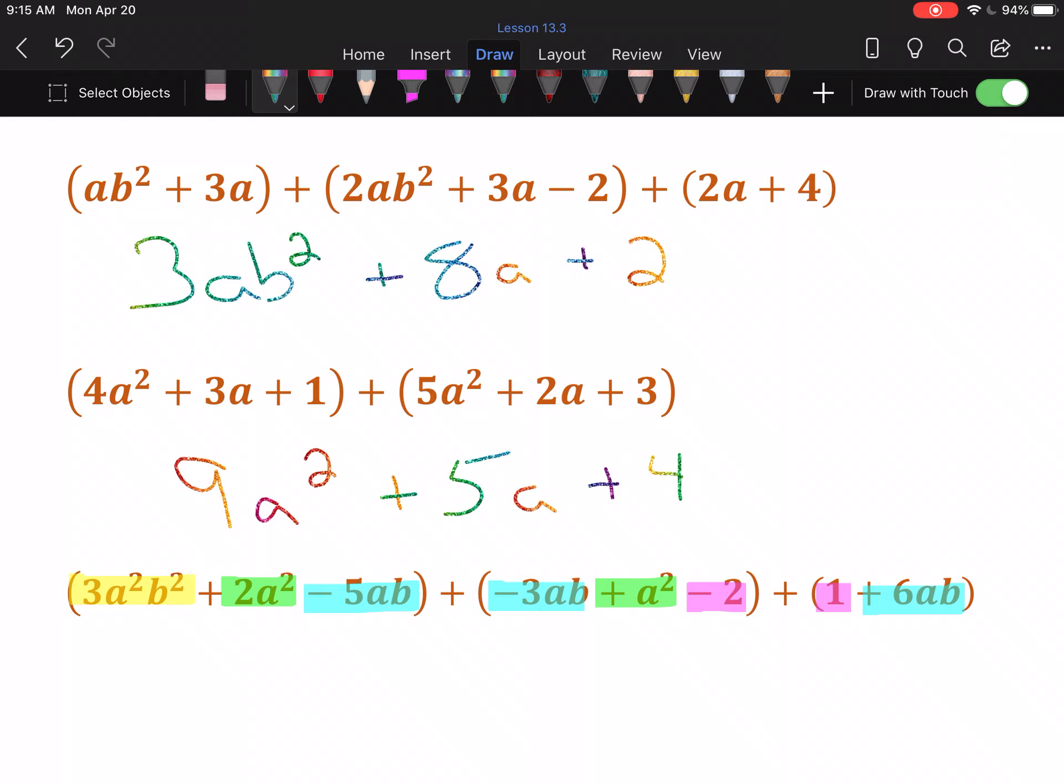So we start with the biggest set of exponents. That's the a²b² pair, and that's by itself, so it has nothing to combine with. Next up are my a squareds. I have 2, and one more is 3. And I apologize, when I highlighted the 2a², I didn't get its plus sign. I really should have.